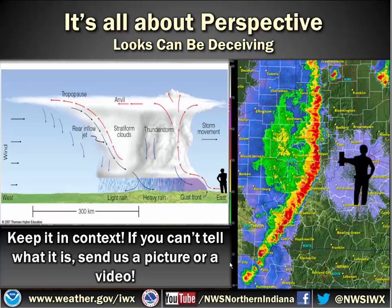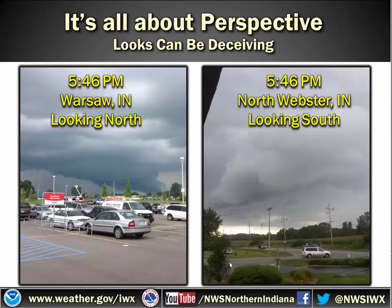If you don't feel comfortable with your diagnosis, send us a picture or a video. We always want to have more information than less. We'll be monitoring Twitter, Facebook, and our email. Keep in mind what you're looking at on radar — if you're seeing something like a bow or a line of storms coming, you know you're probably looking at a shelf cloud. Here's an example from Warsaw, Indiana looking north — people called about a tornado this day, which was actually just a really low hanging cloud. When we were at the office in North Webster looking south at that same cloud, you see the cloud really isn't touching the ground at all. It just appears that way. So keep in mind what you're looking at and try to decide if this is reasonable.